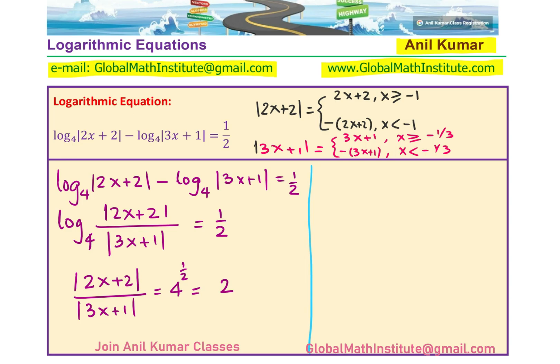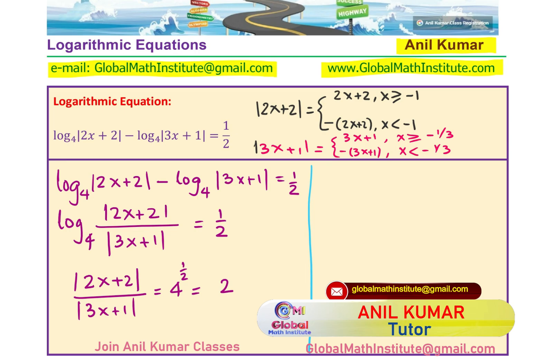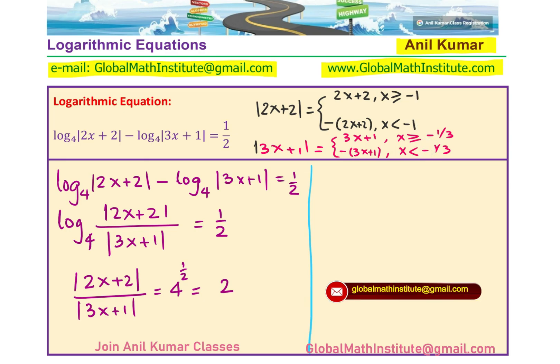To solve this equation, we need to look into three different intervals, remembering that the denominator cannot be 0. Our intervals will be: from minus infinity to −1, from −1 to −1/3, and to the right of −1/3. Keeping that in view, let us rewrite the expression on a fresh page.